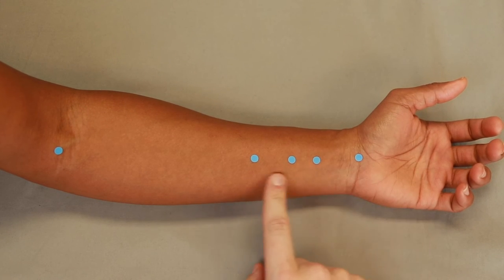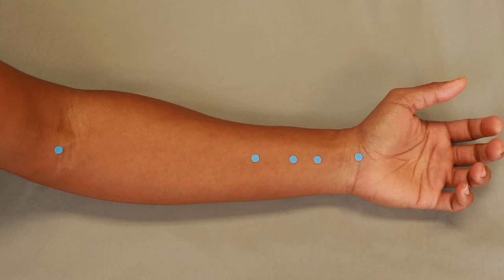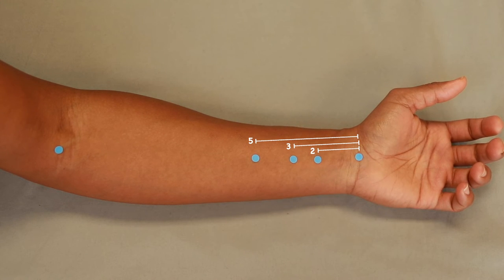So then we can see the spacing here. I usually remember it by 2, 1, 2. Or some people remember it by the distance from the wrist crease. So 2, 3, 5. I don't know if that made sense, but that's how I remember it.